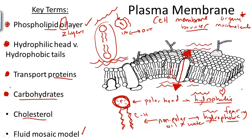Carbohydrates are chains of simple sugars that sort of flag other cells. They serve as a major point of intercellular communication — talking with other cells — so that they can work together.